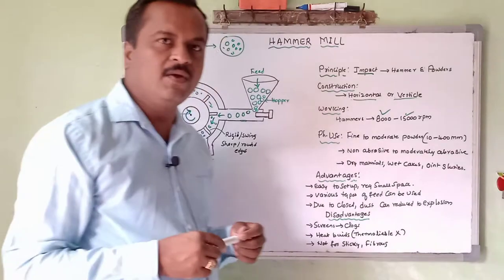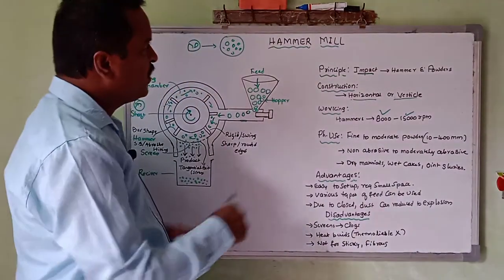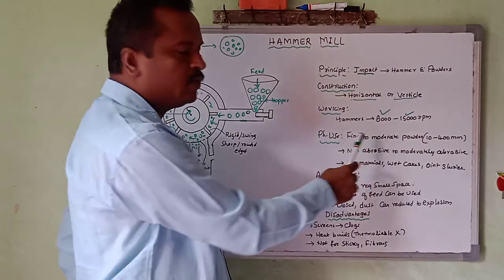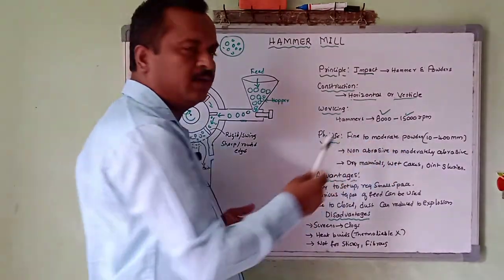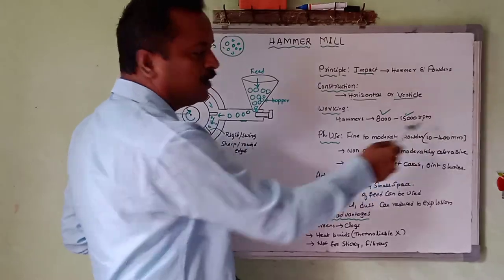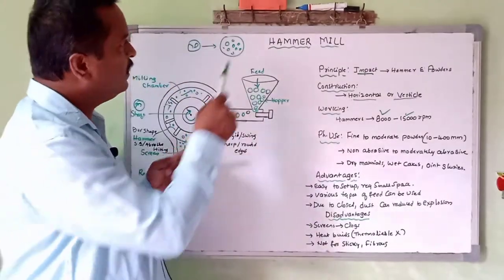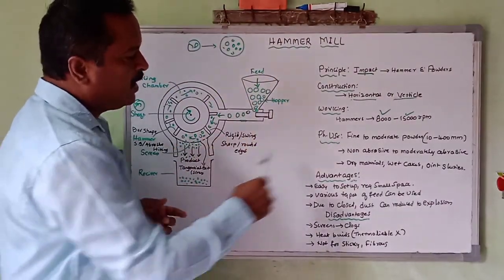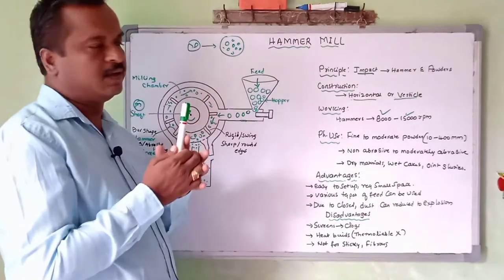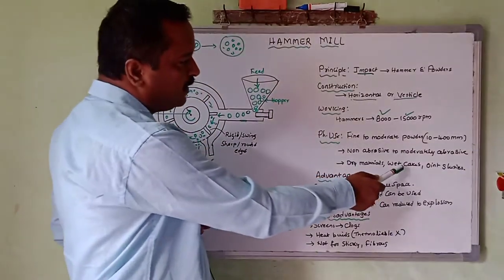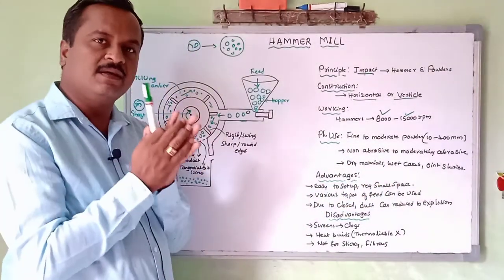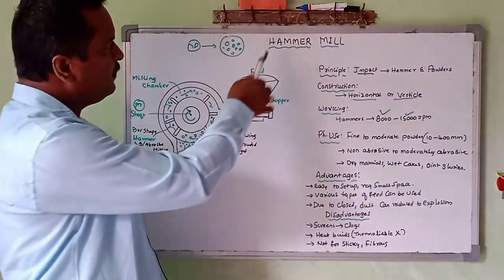The pharmaceutical uses of the hammer mill: it is mainly used to get fine and moderately fine powder. You can get particle sizes of 10 to 400 millimeters from the hammer mill. It can process non-abrasive to moderately abrasive materials. Dry materials, wet cakes, ointments, and slurries can also undergo size reduction using the hammer mill.